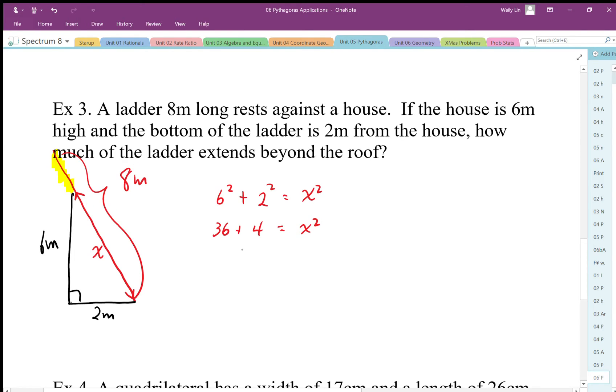So we end up with 36 plus 4 equals x squared. So the square of the diagonal is gonna have a size of 40 squares. If I want to find the length of x, I take the area, square root, and I'm gonna get the side length by doing that.